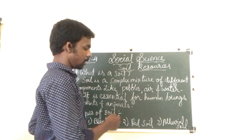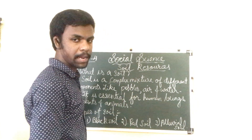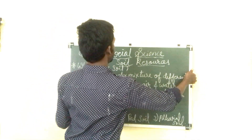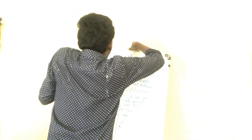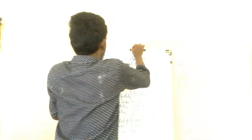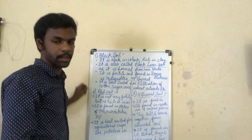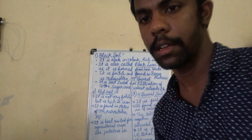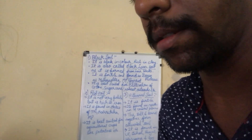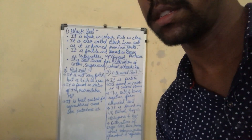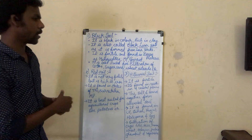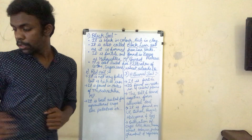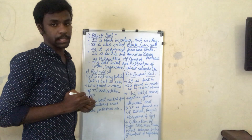I have written the notes on the other side of the board, so let me show that. I hope the end portion is visible for you all. So this is what I had written regarding the soil — the three kinds of soil we are going to discuss today. The first one is black soil.